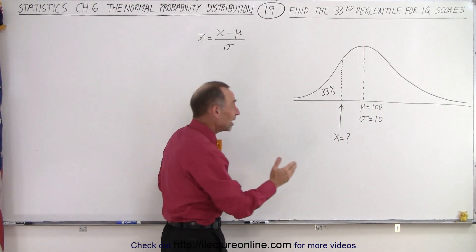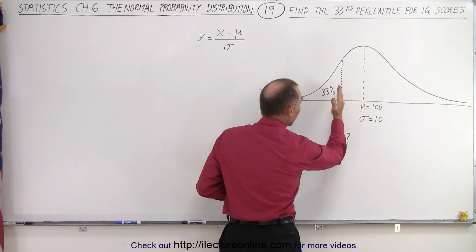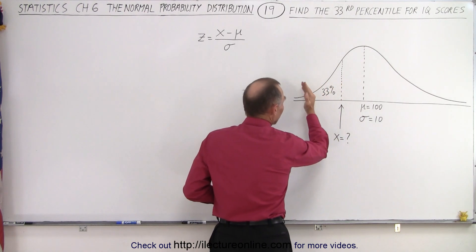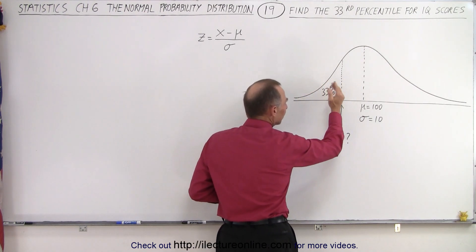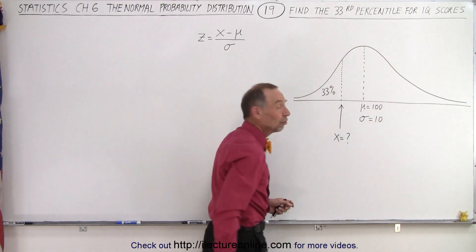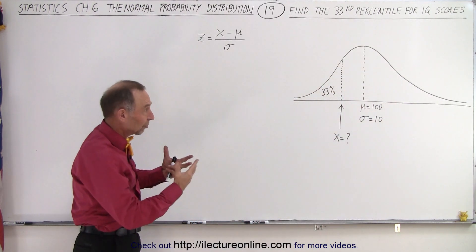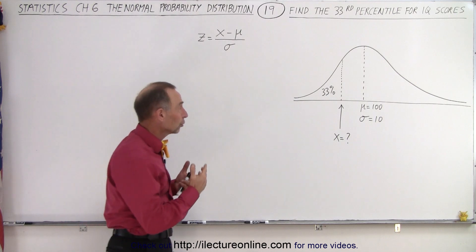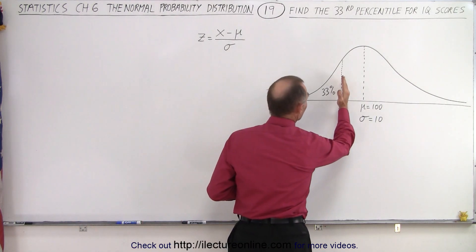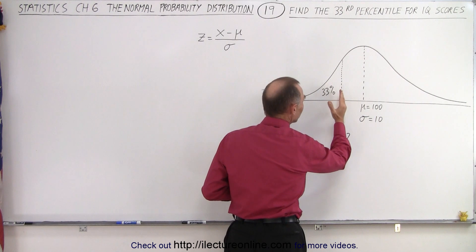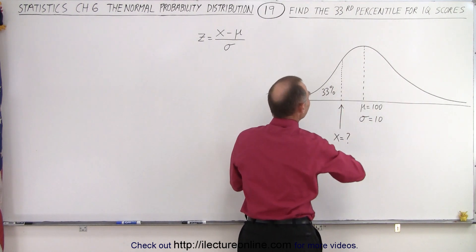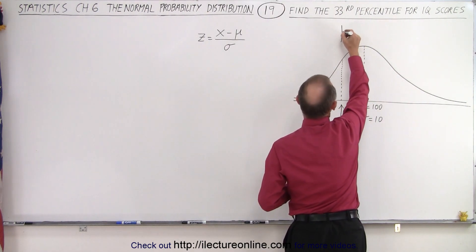What that essentially means is the value for X of the IQ scores such that 33% of the area falls to the left of that point underneath that distribution curve. We're going to solve it by realizing that 33% of the area must be to the left of this point, which means that 67% of the area must be to the right.